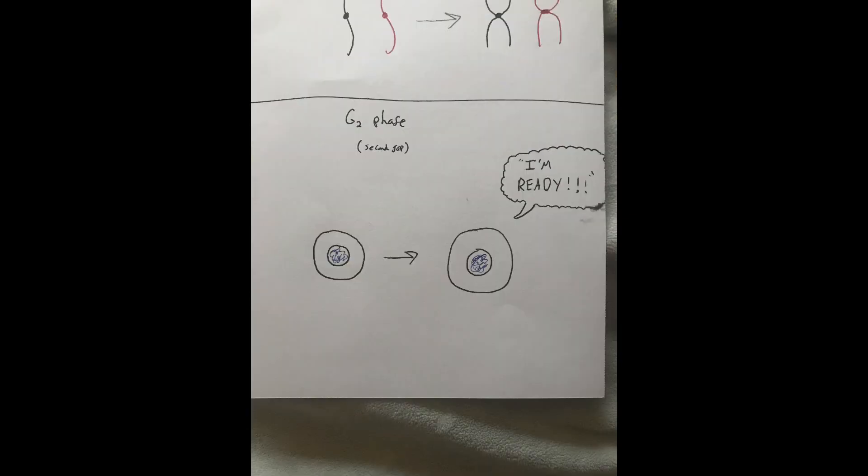Lastly, the G2 phase increases the cell size and completes interphase, making the cell ready to continue on into the five main stages of mitosis. What are the five main stages, you might ask?